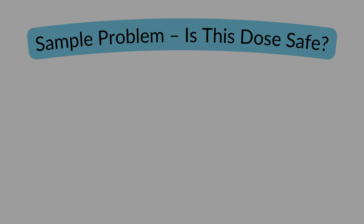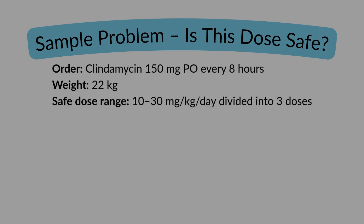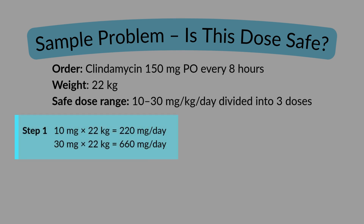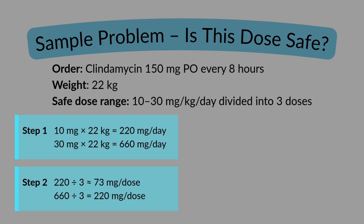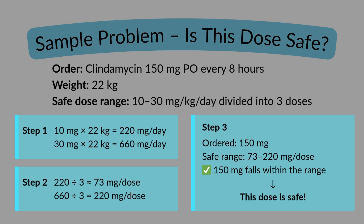Now let's apply it to a real order. The provider has ordered clindamycin 150 milligrams by mouth every eight hours. Your patient's weight is 22 kilograms. The safe dose range is 10 to 30 milligrams per kilogram per day, divided into three doses. Step one: calculate the total daily dose range based on the weight and the safe range. Step two: divide the daily range by three, since the medication is given every eight hours. Step three: compare the ordered dose to the safe range.